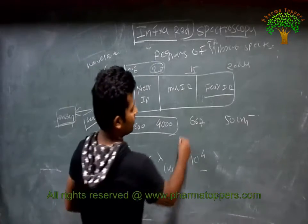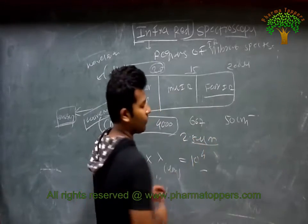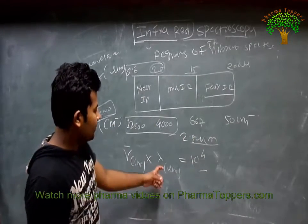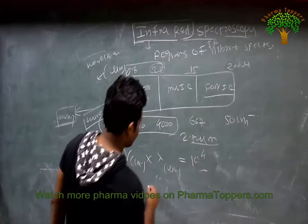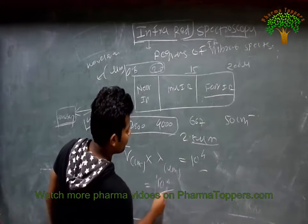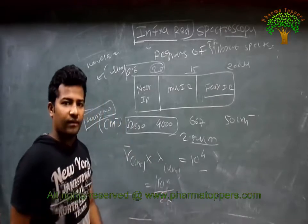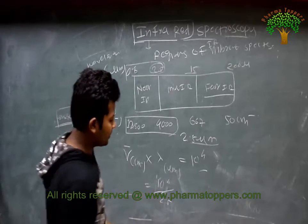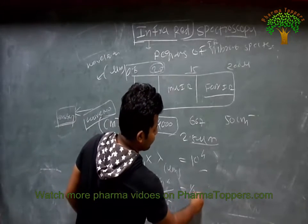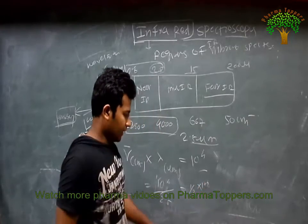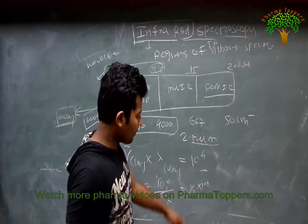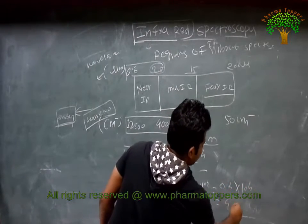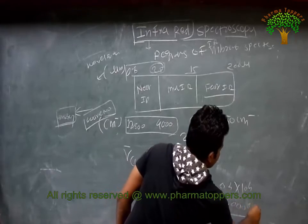Suppose we have a wavelength of 2.5 micrometers and we have to calculate the wavenumber. Using the formula: wavenumber = 1 divided by λ (in cm) = (1 / 2.5) × 10⁴. Calculating: 1/2.5 = 0.4, so 0.4 × 10⁴ = 4000 cm⁻¹.